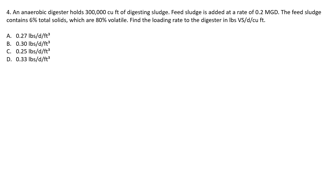Question four: an aerobic digester holds 300,000 cubic feet of digesting sludge. Feed sludge is added at a rate of 0.2 MGD. The feed sludge contains 6% total solids, which are 80% volatile. Find the loading rate to the digester in pounds volatile solids per day per cubic foot.